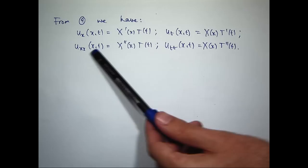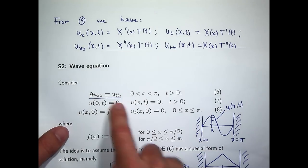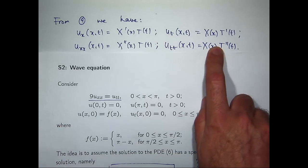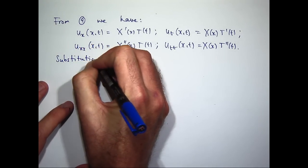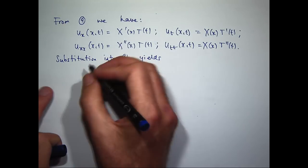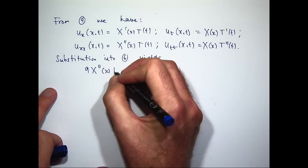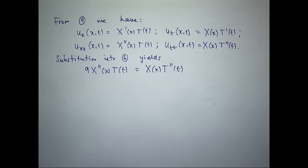Now what I want to do is take those two derivatives and substitute them back into the original PDE, replacing the appropriate terms. So I'm going to get something like 9 times big X double prime times big T equals big X times big T double prime. Anyone remember what we want to do now? Separate the variables — get all the X's on one side and all the T's on the other.